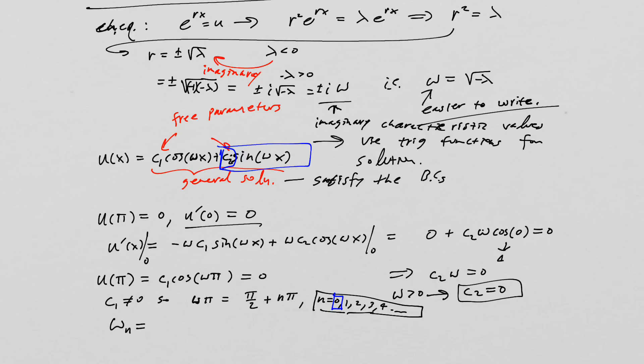So that means omega n is equal to one half plus n, where n is equal to zero, one, two, and so on and so forth. So that's good. And that means then that lambda n is equal to negative quantity one half plus n squared.